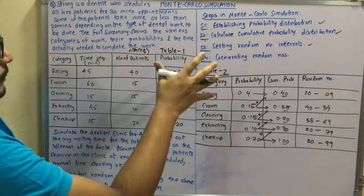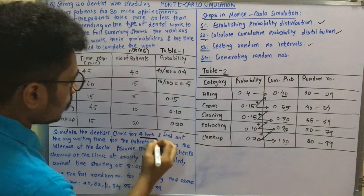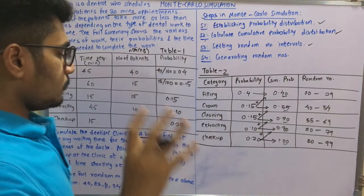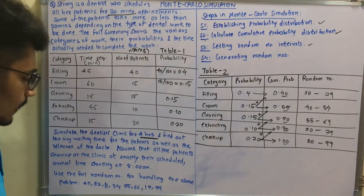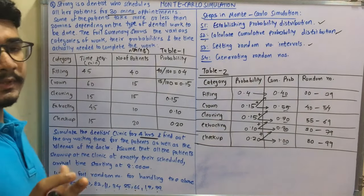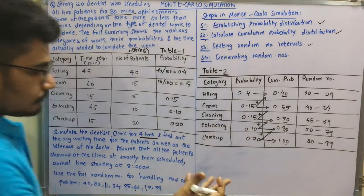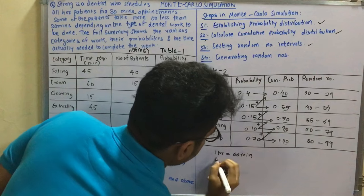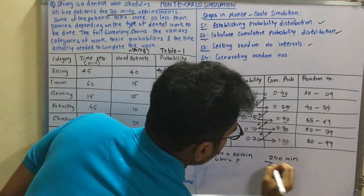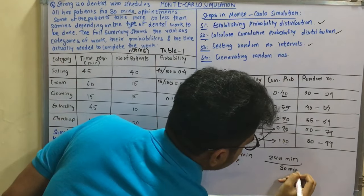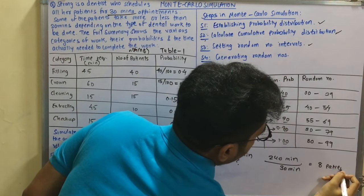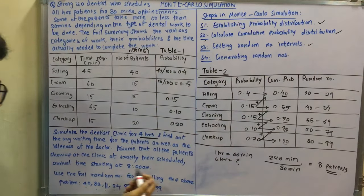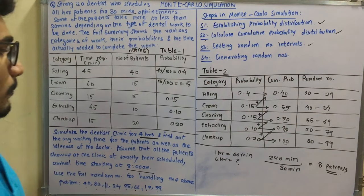The dentist clinic is simulated for four hours, with each patient scheduled for a 30-minute appointment. To determine the number of patients: 1 hour equals 60 minutes, so 4 hours equals 240 minutes. Dividing 240 by 30 gives 8 patients. This is confirmed by the 8 random numbers provided. The first patient arrives at 8 AM.